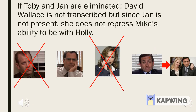In another double mutation where Toby and Jan are eliminated, David is not transcribed, but he doesn't need to be there to repress Jan's actions because she was also eliminated. In this situation, Mike and Holly are still able to be together as there is nothing repressing their relationship.